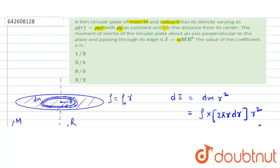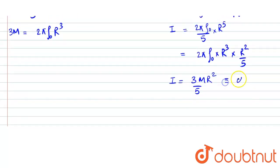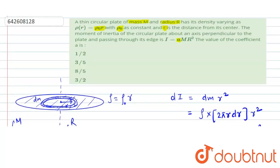So now we can compare it with alpha m r square. What should be the value of alpha? We can choose from the options. It would be 3 by 5, which is there in option B. I hope this helps you with the answer. Thank you.